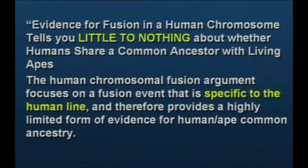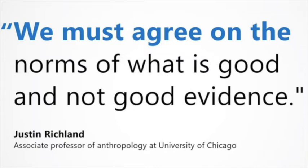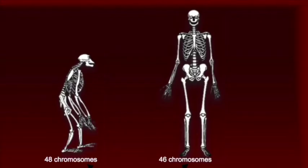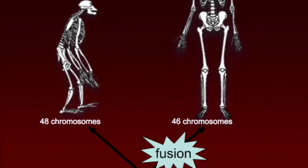This statement comes from researcher Casey Luskin regarding the chromosome 2 fusion site. He says: evidence for fusion in the human chromosome tells you little to nothing about whether humans share a common ancestor with living apes. The human chromosome fusion argument focuses on a fusion event specific to the human line and therefore provides a highly limited form of evidence for human-ape common ancestry. Evidence for a chromosomal fusion event is not evidence for when that event took place, nor is it evidence for the ancestry prior to that event.